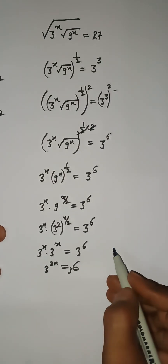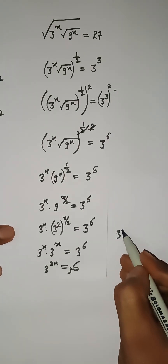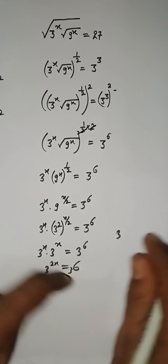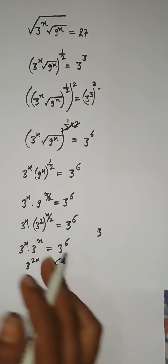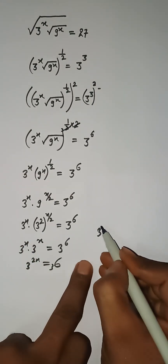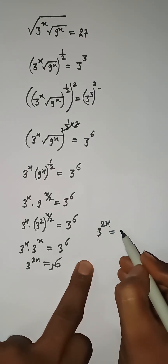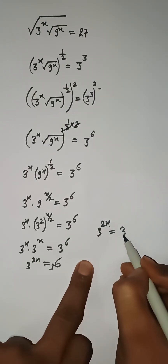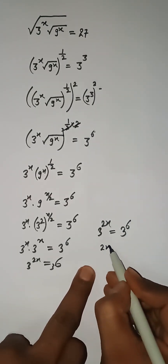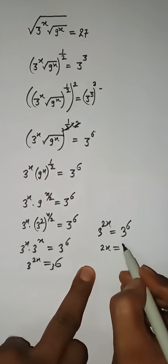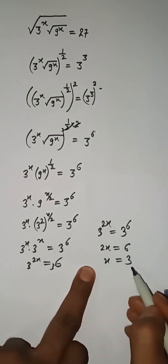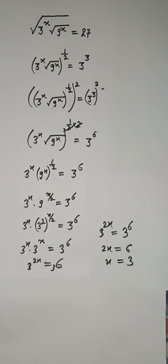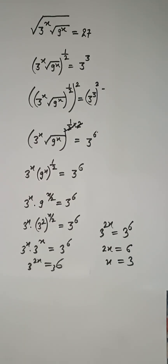We have 3 to the power 2x equal to 3 to the power 6. We can just equate their exponents because the bases are the same, so we have 2x equal to 6, therefore x equal to 3 is the solution of this problem.